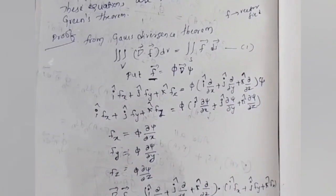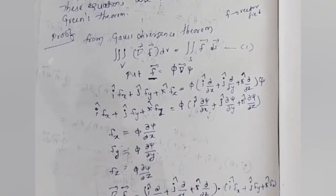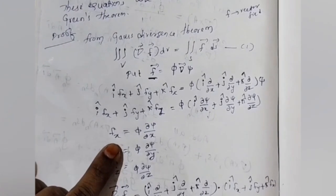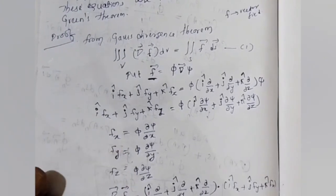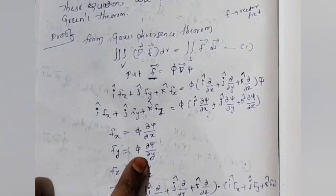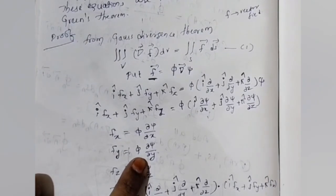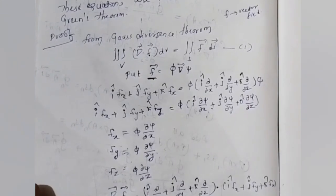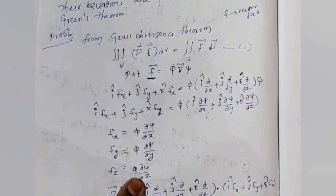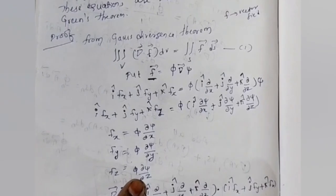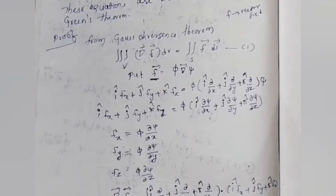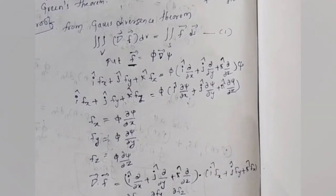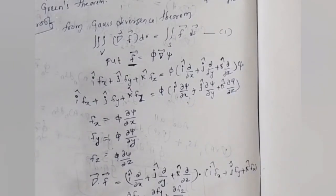Substituting Fx, Fy, Fz into del dot F: ∂/∂x(π ∂ψ/∂x) + ∂/∂y(π ∂ψ/∂y) + ∂/∂z(π ∂ψ/∂z). Now we apply the UV product rule: UV' + VU'.